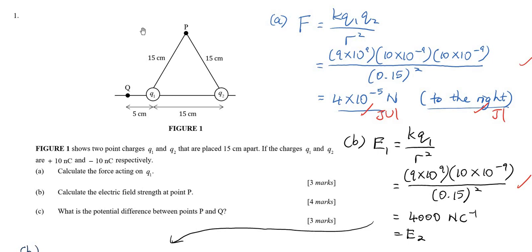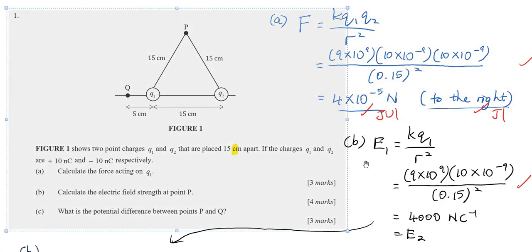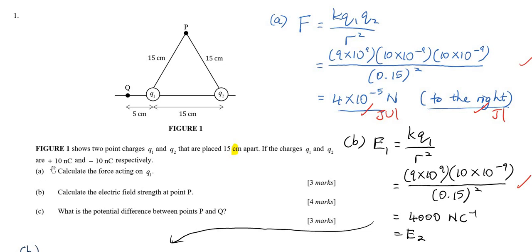Let's look at the first question on electrostatics. Figure one shows two point charges q1 and q2 placed 15 cm apart. Please take note of the unit — centimeter — you must change it to the SI unit. The charges q1 and q2 are 10 nanocoulombs and negative 10 nanocoulombs respectively.